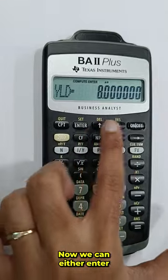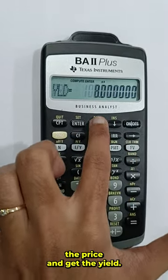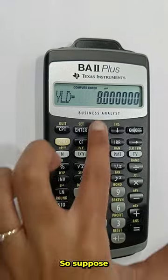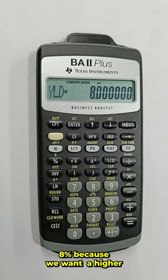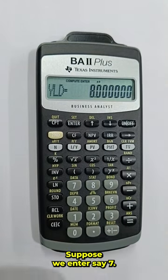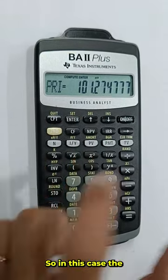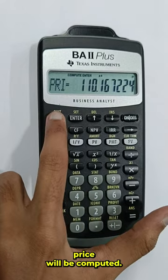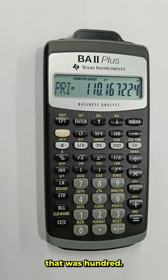Now we can either enter the yield and get the price, or we can enter the price and get the yield. Suppose we want to enter the yield as 8% because we want a higher price of the bond. So suppose we enter say 7. In this case the price will be compute 110, which is greater than the face value that was 100.